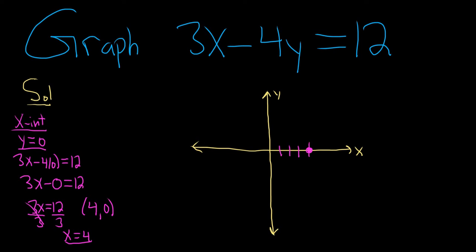Good stuff. We're almost done. Now, let's go ahead and find the y-intercept. To find the y-intercept, you set the other one equal to 0. So you set x equal to 0 in the equation.